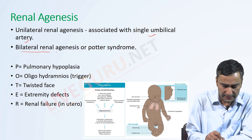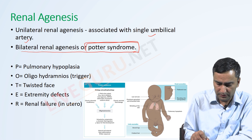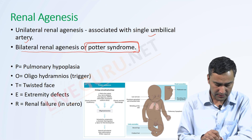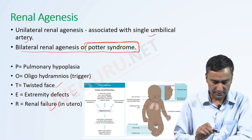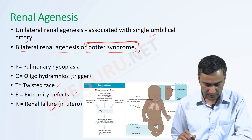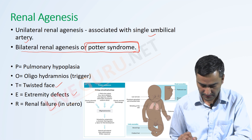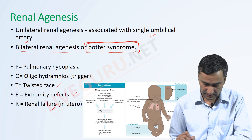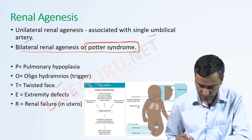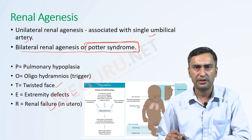Renal agenesis is generally associated with a single umbilical artery, which may be associated with bilateral renal agenesis or Potter syndrome. Potter syndrome is an important term they may use in questions. It consists of pulmonary hypoplasia, oligohydramnios, twisted facies, extremities defect, and renal failure. The typical Potter syndrome face shows twisted facies, pulmonary hypoplasia in the lungs, oligohydramnios during intrauterine period, and extremities defects such as claw feet or bowed legs.